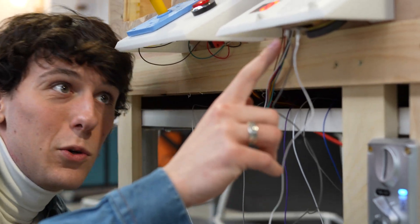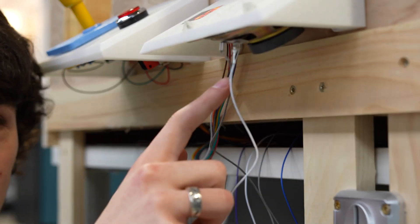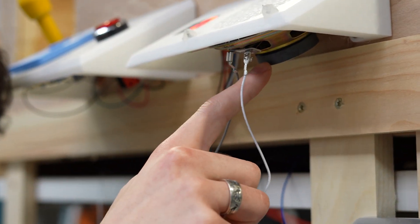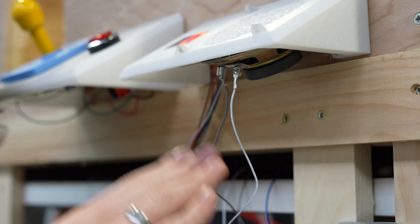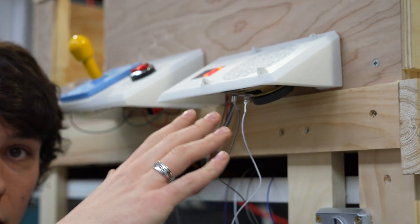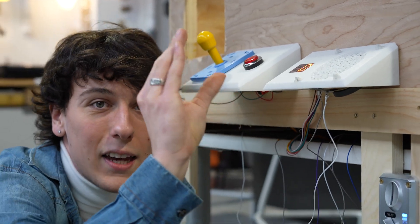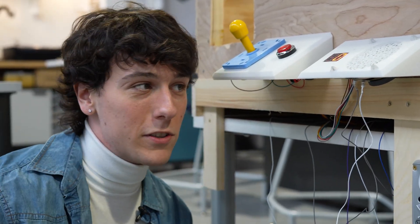Underneath here the speaker just has two inputs. One of them is a positive and the other one is a negative. It uses these inputs to move a weight which compresses air and creates waves of high and low compression which we perceive as sound.